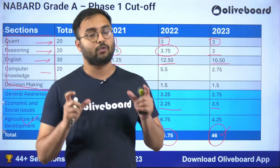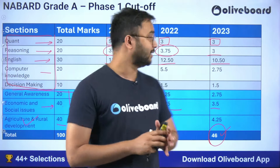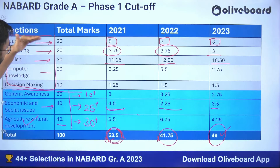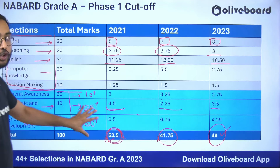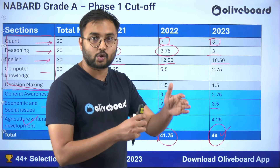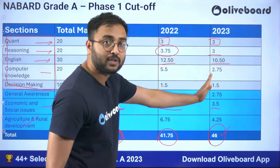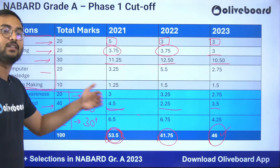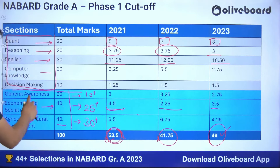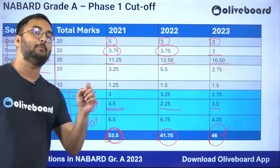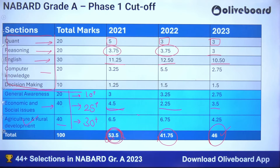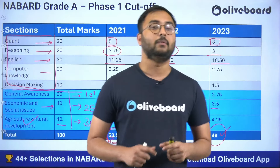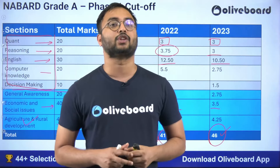This is the complete cutoff analysis for your Phase 1 exam. I hope this session was useful in understanding how to clear each qualifying section and how to clear the overall merit cutoff. This will help you set a target score and understand each section's requirements. Always remember: your target score should be GA 10 plus, ESI 25 plus, ARD 30 plus — giving you 65 plus marks, which will comfortably clear the cutoff across all three years shown. We will meet next time with one more important session for NABARD Grade A 2024.